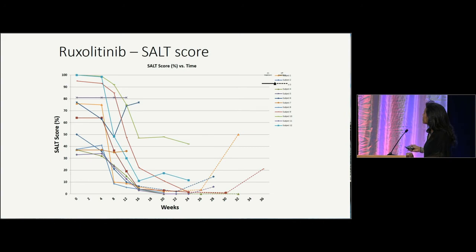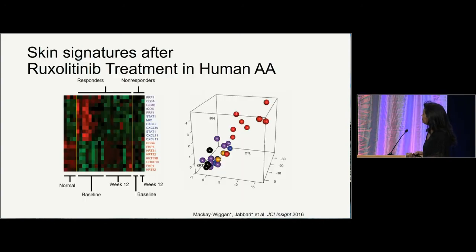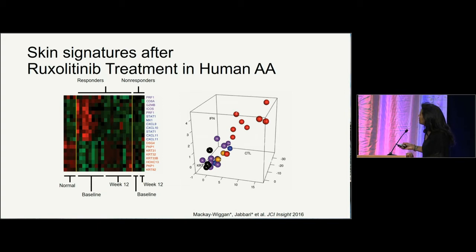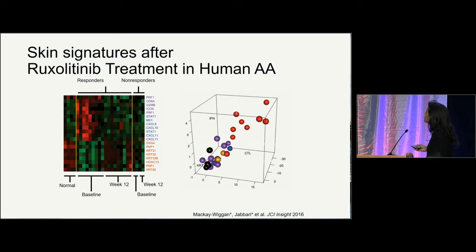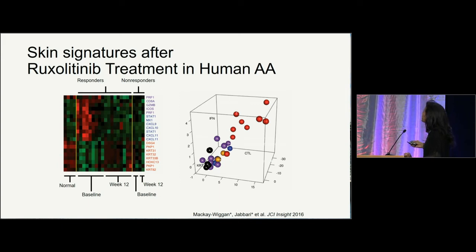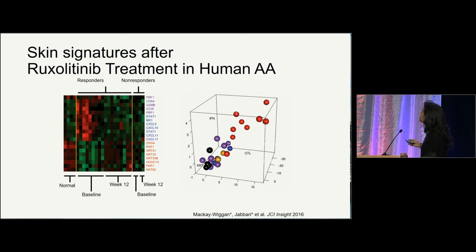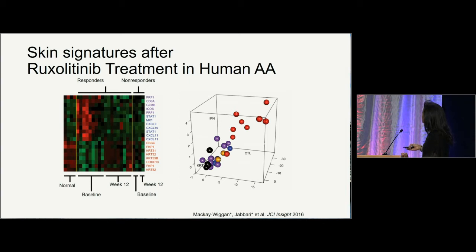You then see SALT scores starting to climb again once patients are taken off treatment. We looked at biopsies and blood: gene expression heat maps show our responders at baseline looked very different from normal patients without alopecia areata, and following treatment, their gene expression more closely approximated the normal patients. Looking at hair keratin scores, interferon gamma, and cytotoxic T lymphocyte levels — responders at baseline had high interferon gamma, high cytotoxic T lymphocyte scores, and low hair keratin scores, but after treatment these came to more closely approximate the normal patients. Non-responders shown in yellow looked similar to normal patients at baseline.